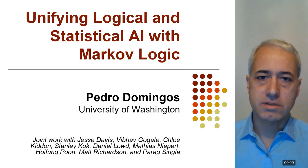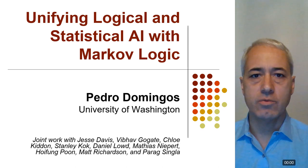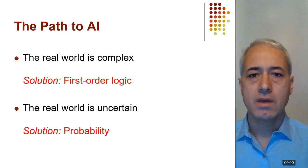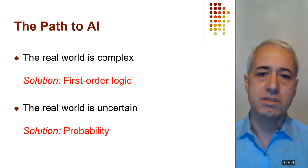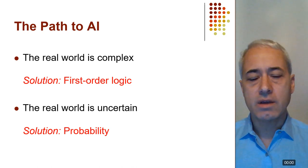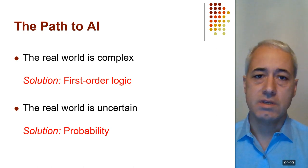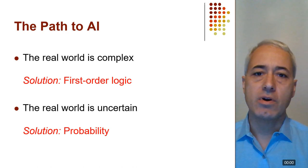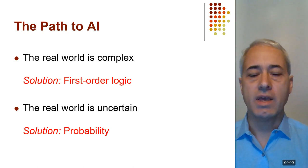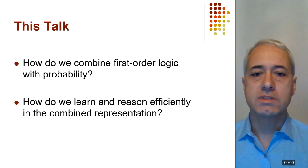Hi, I'm Pedro Domingos, and I'm going to talk about unifying logical and statistical AI with Markov logic. Intelligent systems must be able to deal with the complexity and the uncertainty of the real world. The language of choice in AI for dealing with complexity is first-order logic, and the language of choice for dealing with uncertainty is probability. So in order to make progress towards really good AI, we need to be able to combine the two, and that's what this talk is about.